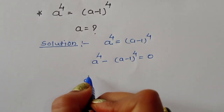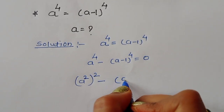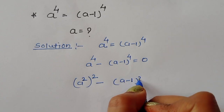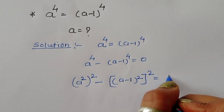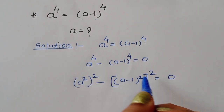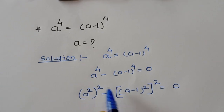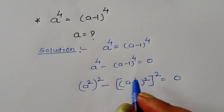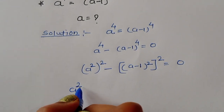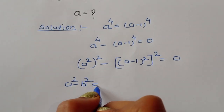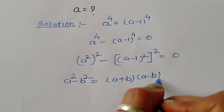Now a power 4 we can convert into squared form: a square whole square minus a minus 1 square whole square is equal to 0. This is the form of a square minus b square, where a is a square and b is a minus 1 whole square.